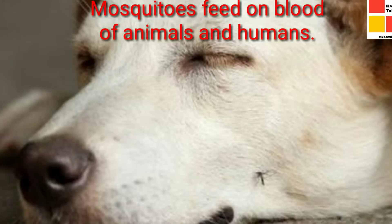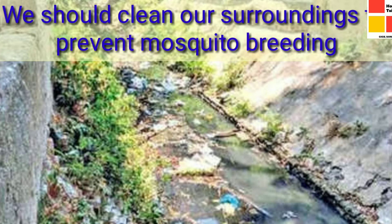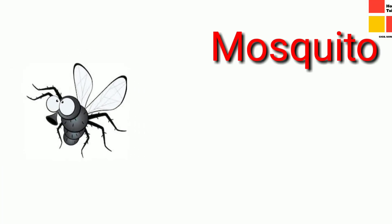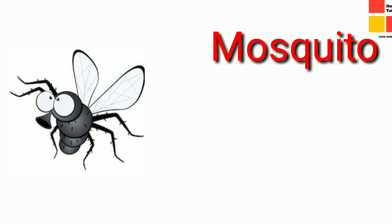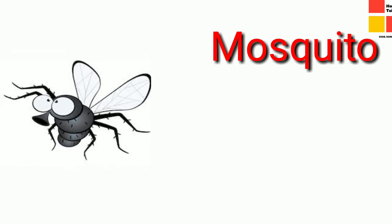Children, do you know how mosquitoes spread? Mosquitoes will lay eggs in drains. So we should clean our surroundings in order to prevent mosquitoes. Now let's study the spelling of mosquito. Read out: M-O-S-Q-U-I-T-O, mosquito.